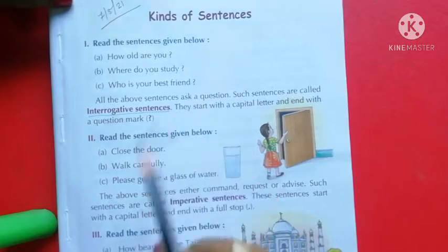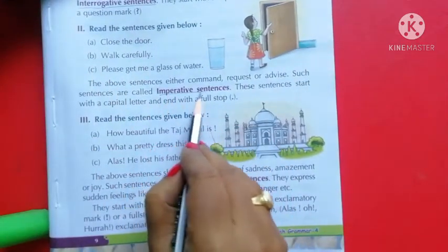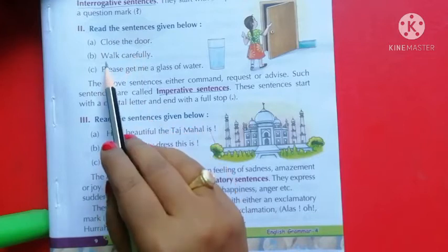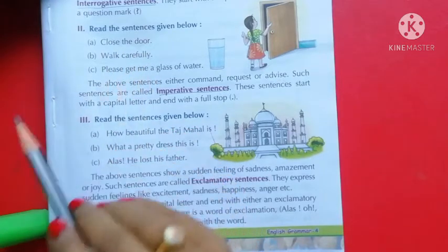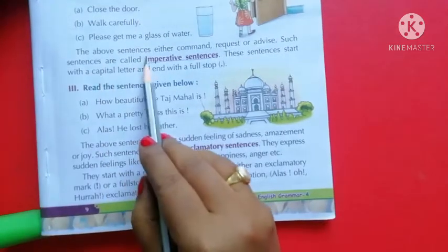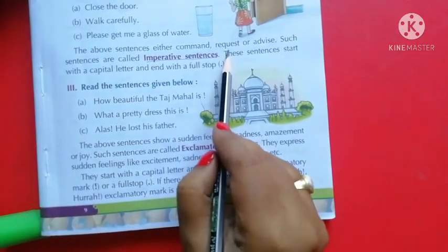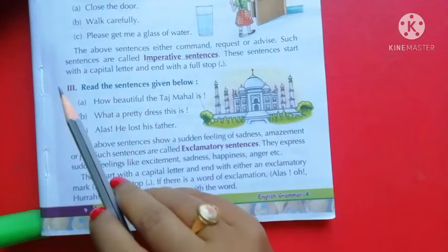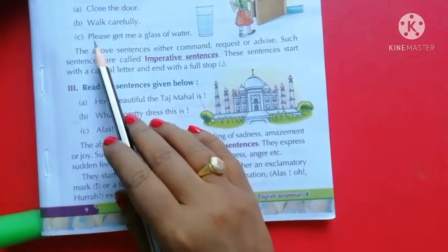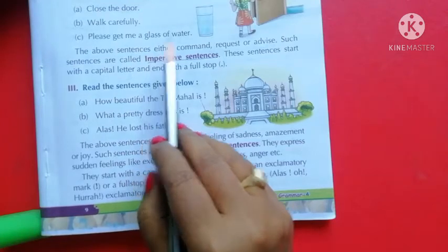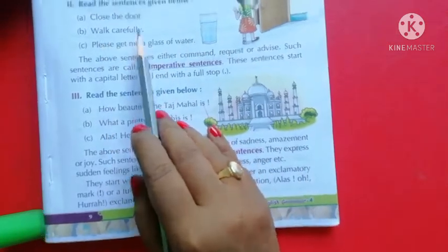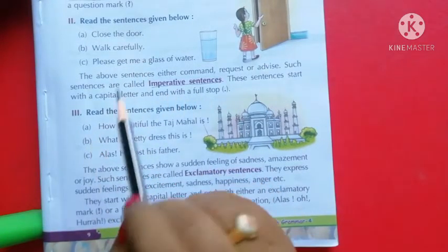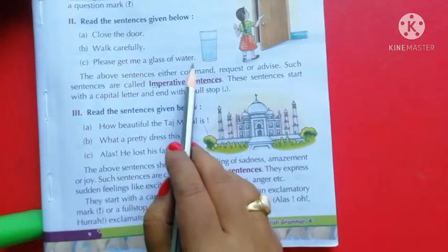The second type is imperative sentences. For example: Close the door. Walk carefully. Please get me a glass of water. The above sentences are either a command, request, or advice. Close the door is a command, please get me a glass of water is a request, and walk carefully is advice. These are called imperative sentences. They start with a capital letter and end with a full stop.